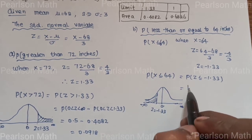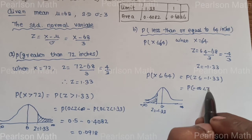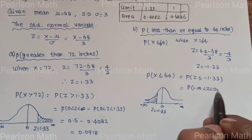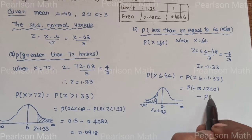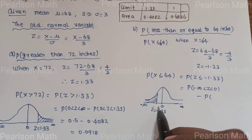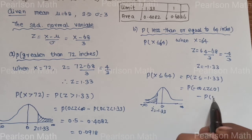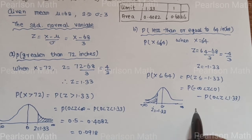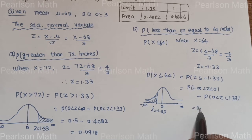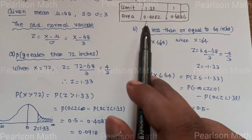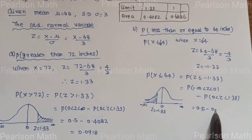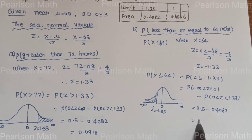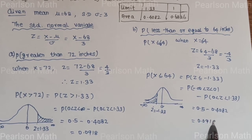P(Z ≤ −1.33) = P(−∞ < Z < 0) − P(−1.33 < Z < 0). By symmetry, P(−1.33 < Z < 0) = P(0 < Z < 1.33) = 0.4082. So P(Z ≤ −1.33) = 0.5 − 0.4082 = 0.0918, approximately 46 students.